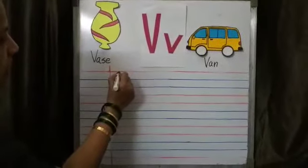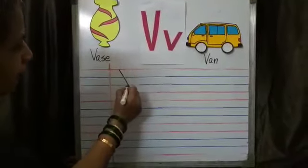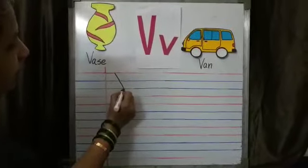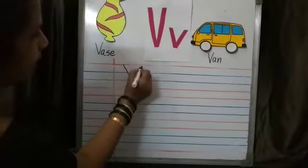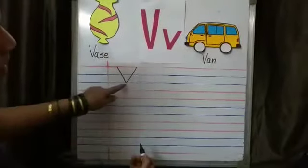We will start from top red line, slanting line till bottom blue line. Then again we will not pick up the pencil. We will go up to the red line. This is V.